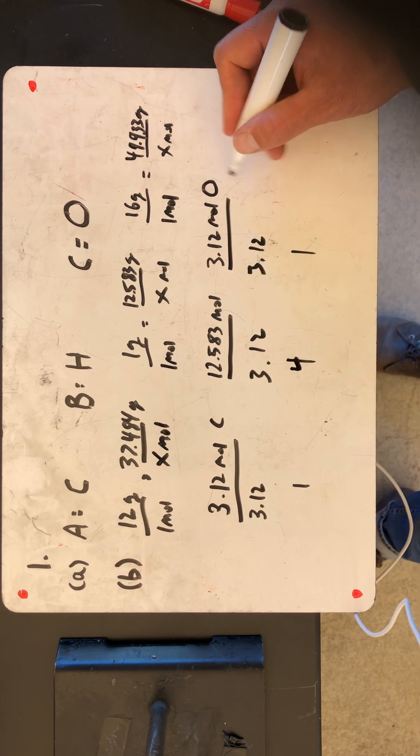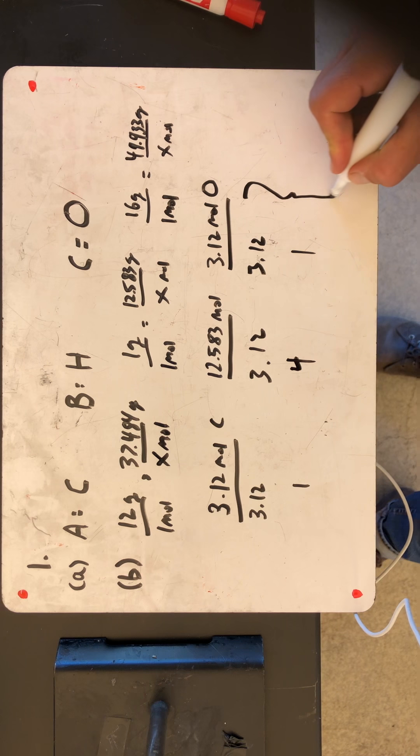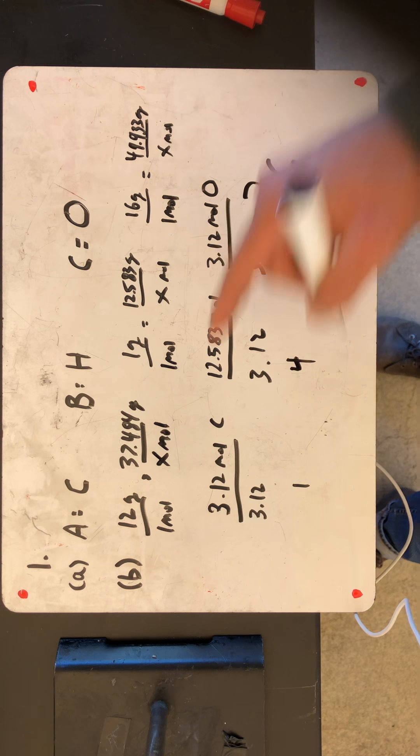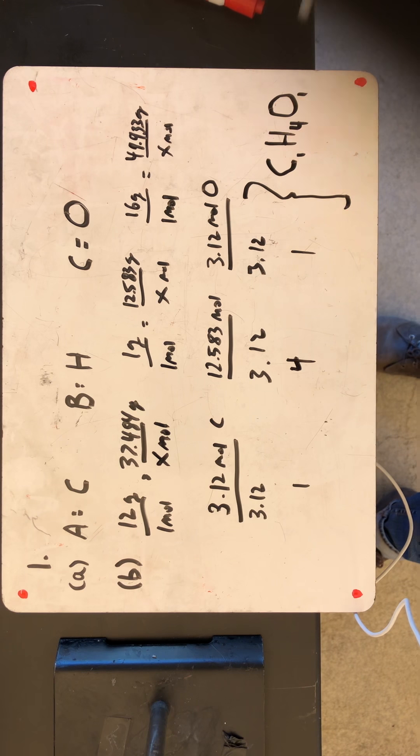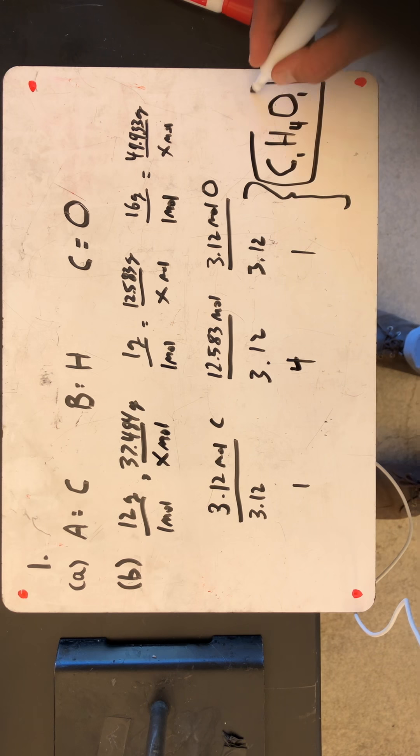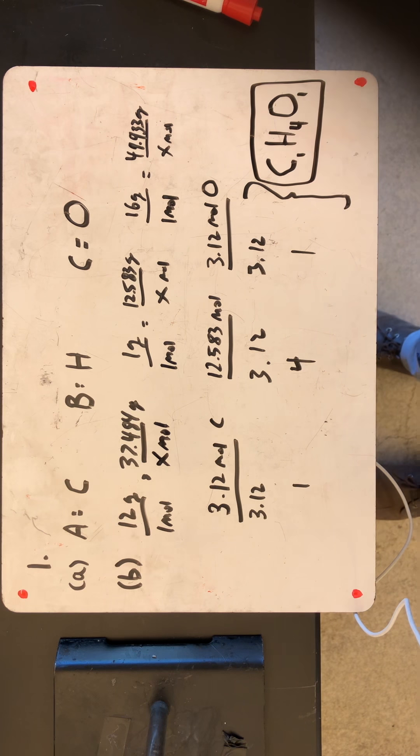So the formula for the compound, when we bring this all together, is C1H4O1. And that's gonna be the formula for the unknown compound. And we're gonna use that throughout in this problem.